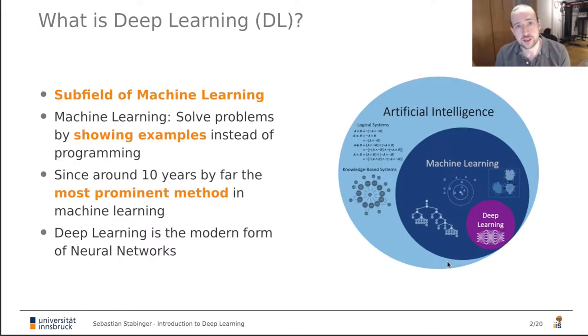So what is deep learning? Deep learning is a subfield of machine learning, which again is a subfield of artificial intelligence. And the idea of machine learning is that instead of programming a solution to a problem yourself, you show a system examples of solutions and the system learns on its own how to solve those problems. And since around 10 years ago, deep learning is the most prominent method in machine learning. And if you've heard about artificial neural networks before, then deep learning is basically the modern form of that.